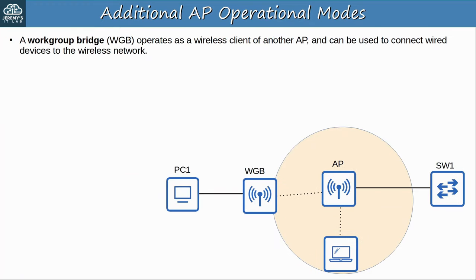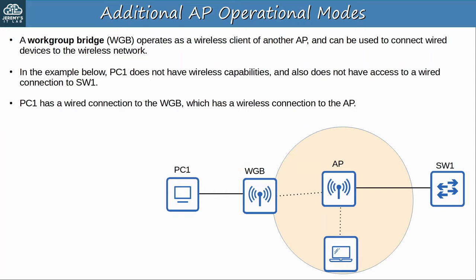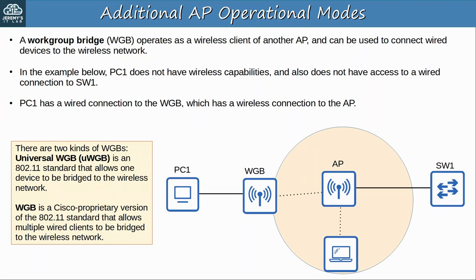An AP operating as a workgroup bridge operates as a wireless client of another AP and can be used to connect wired devices to the wireless network. For example, a PC that does not have wireless capabilities and lacks a wired connection to the switch can connect via a workgroup bridge, which has a wireless connection to the AP. There are two kinds: Universal WGB (UWGB), an 802.11 standard that allows one device to be bridged to the wireless network, and Cisco's proprietary WGB, which allows multiple wired clients to be bridged to the wireless network.